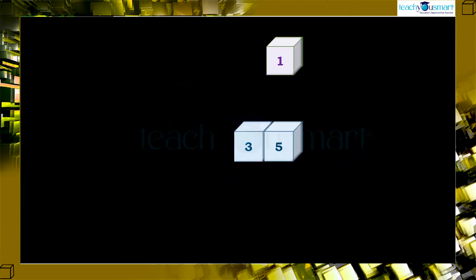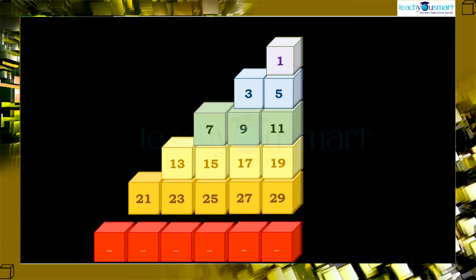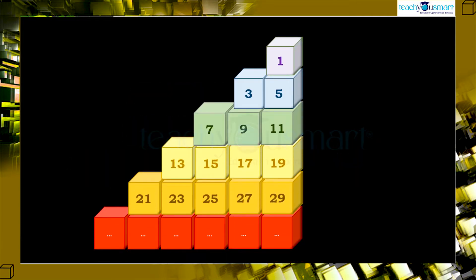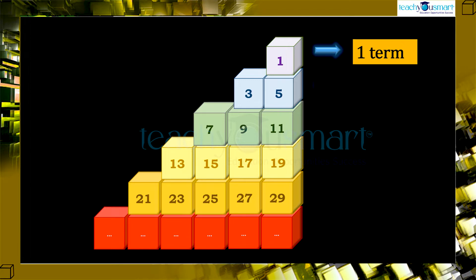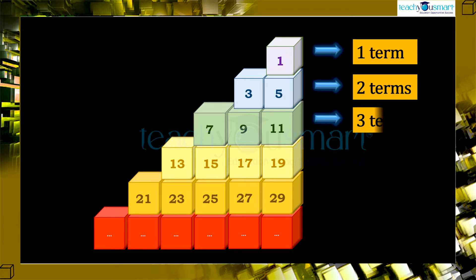Now, let's have a look at an interesting pattern. Have you understood the pattern? Yes, the pattern is made of only odd numbers. The number of terms in the first row is 1, in the second row is 2, and the third row is 3, and so on.